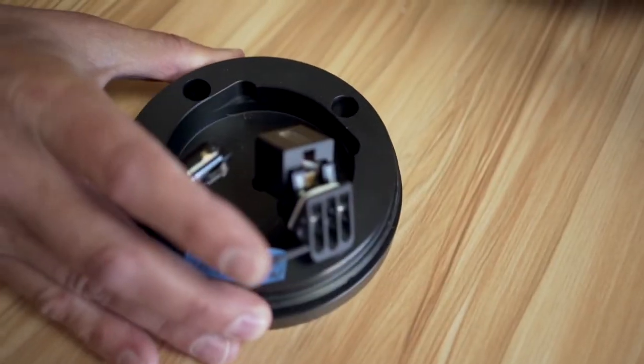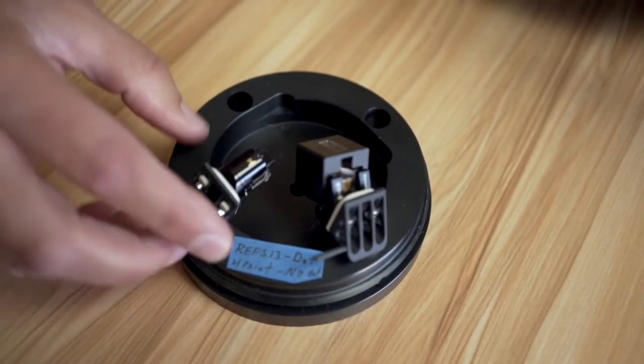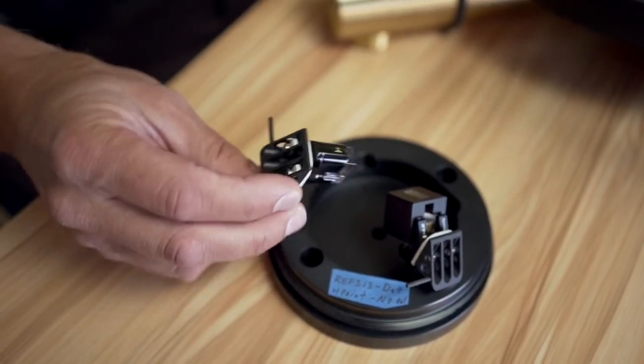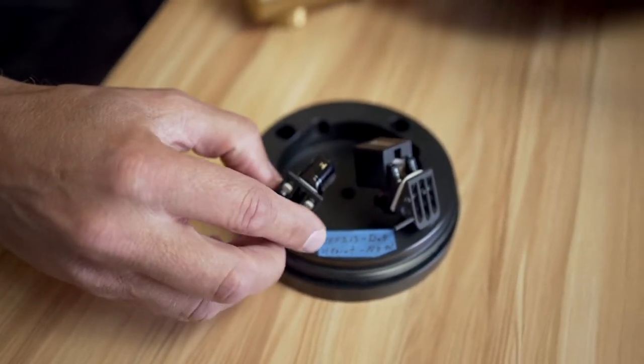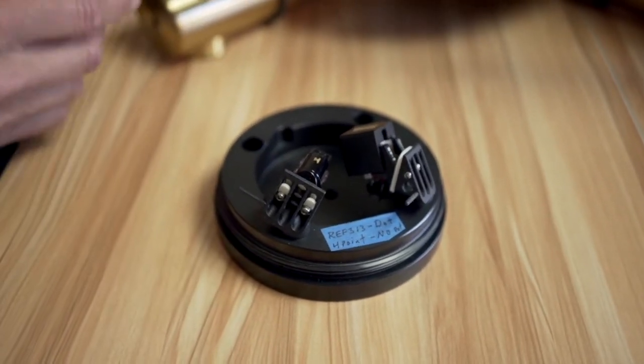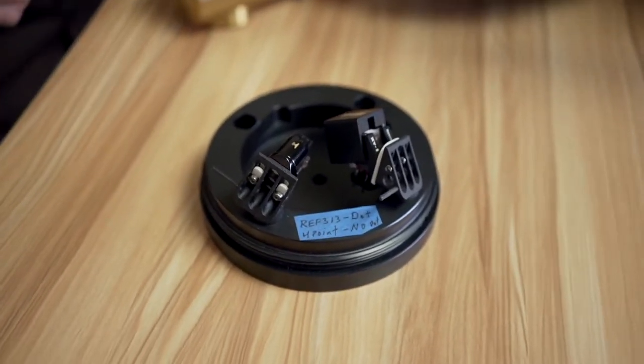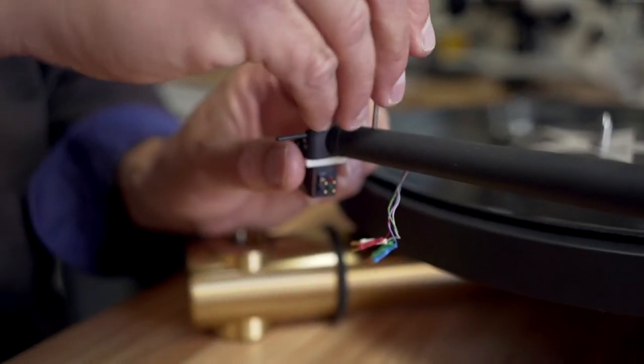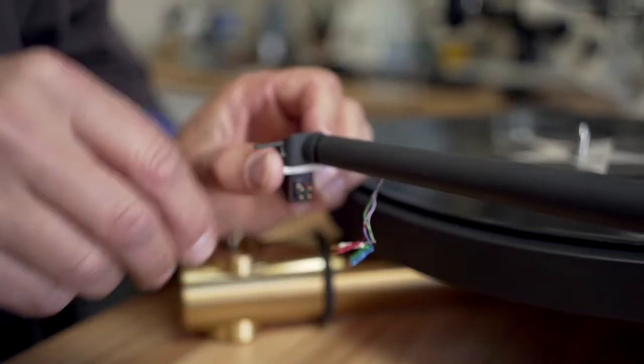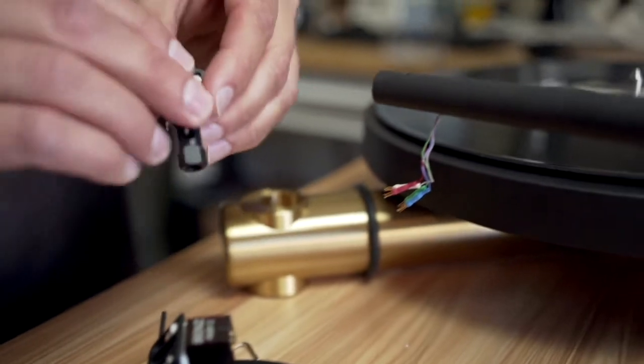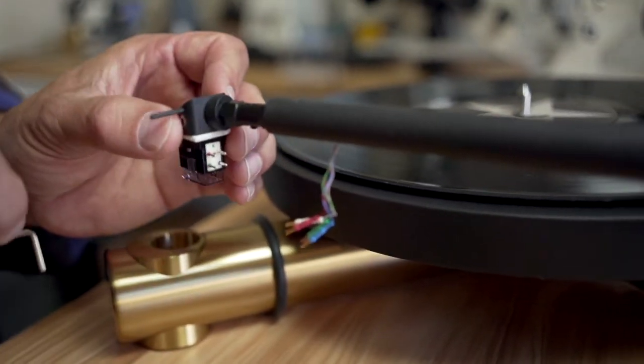So if your tonearm has removable head shells, you could conceivably mount each one of your analyzed cartridges to a separate head shell and then swap between cartridges in a matter of one or two minutes, making it easy to ensure that each cartridge is set up to perfection. All you need to do is adjust the tonearm height to compensate for the differences in height between the cartridges and reset your vertical tracking force and anti-skating.